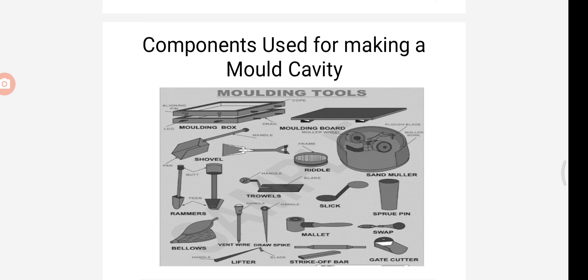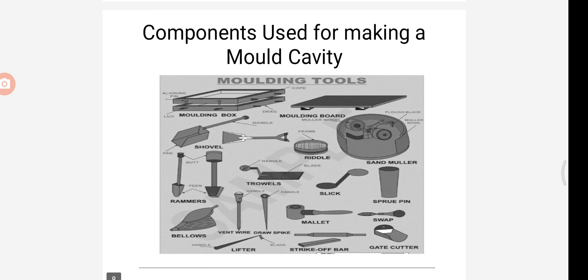We can see drag and cope. The drag box is on the lower side and the cope box is on the upper side. The top box is always known as the cope box and the bottom box is known as the drag box. These two boxes are aligned with the help of an aligning pin. A lug is used for lifting the box. Inside the molding box the pattern is kept, and above the pattern sand is packed with the help of ramming.